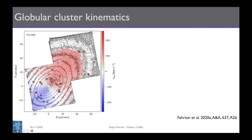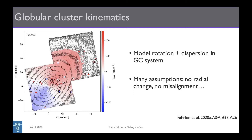In this case the globular cluster system is very nicely tracing what is happening in the galaxy, rotating in the same sense. To quantify this, we build a simple kinematic model describing the total globular cluster system rotation and velocity dispersion, though without radial variation since in most galaxies we only get a handful of globular cluster measurements.